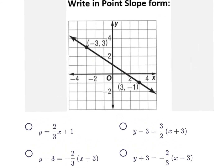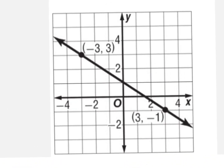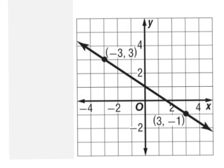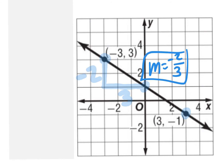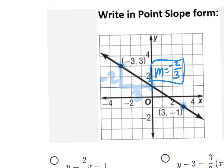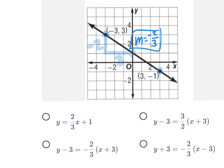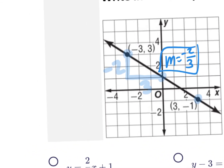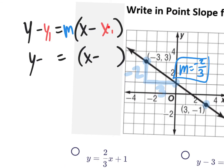The next question says write in point-slope form. Point-slope form is y minus y1 equals m parentheses x minus x1. We need a slope and two nice points. They give you a point up here and one down there, but you don't have to use those — you could use any nice point. From left to right, going down 2 and running 3 gives a slope of negative 2 thirds.